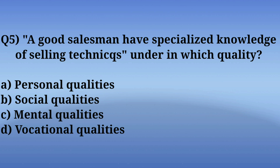Question number 5: A good salesman has specialized knowledge of selling techniques — under which quality does this fall? Options are: A. Personal qualities, B. Social qualities, C. Mental qualities, D. Vocational qualities. The correct answer is Option D — Vocational qualities. Vocational qualities include professional knowledge and techniques such as selling techniques.